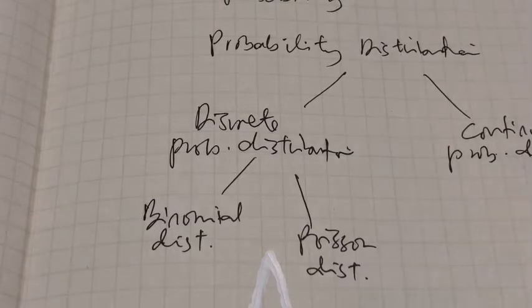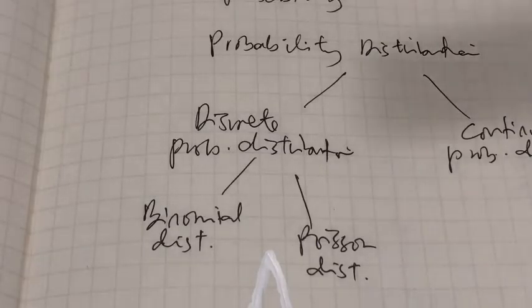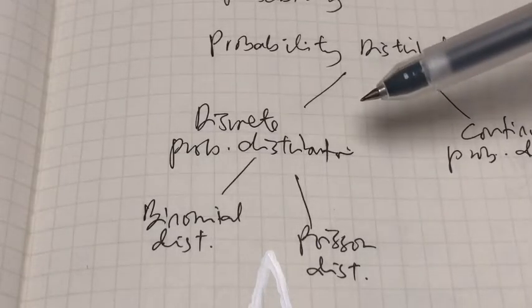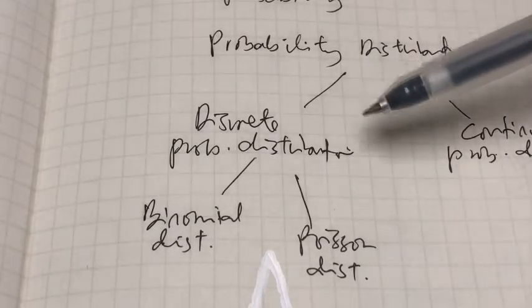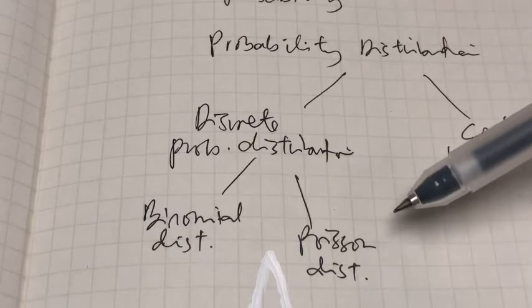Hey guys, Assalamualaikum. Welcome back to another virtual lecture. In this video, we will look at the second type of discrete probability distribution, which is the Poisson distribution.